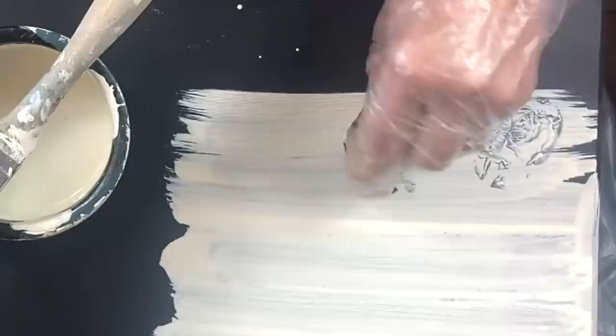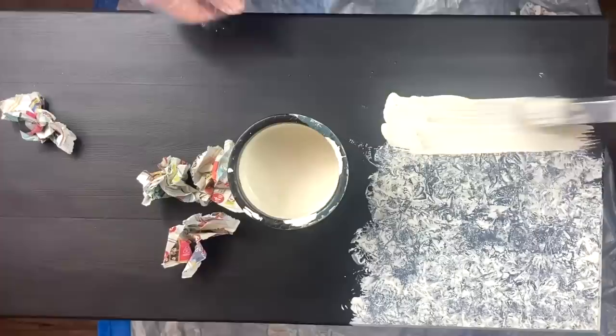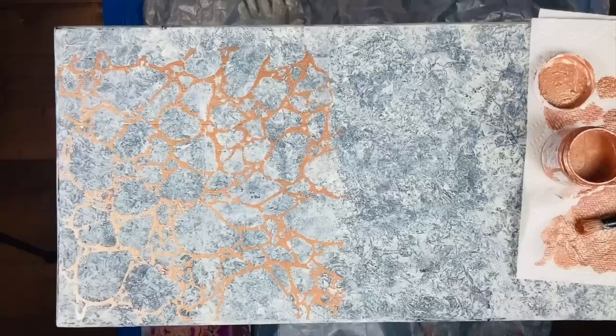Taking pieces of the scrunched up paper, I press it into the paint and wiggle it around. Keep repeating the process until you get to the end. Now the tabletop is dry, I'm going to use this stencil. I'm going to give it two coats of this gloss decorators varnish.